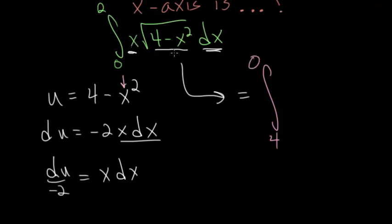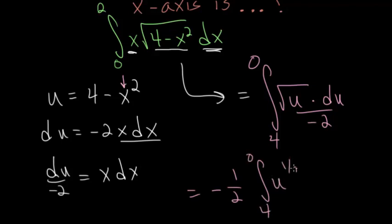Rewriting this integral in terms of u, we have the square root of 4 minus x squared, which we replace with u. So we have the square root of u, multiplied by x dx, but that's just du over minus 2. We can further simplify this by factoring out the minus 1 half, and then we have the integral from 4 to 0 of u to the 1 half du. I rewrote it like this because it's easier to find an antiderivative without the square root notation.